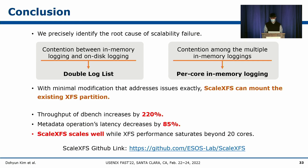To conclude: in this work, we precisely identified the root cause of scalability failure in XFS, finding two major contentions — between in-memory and on-disk logging, and among multiple in-memory loggings. To resolve these, we propose the double log list and POCO in-memory logging. With simple but elegant data structures, we minimize code modification, allowing ScaleXFS to mount existing XFS partitions. ScaleXFS achieves 220% higher DBench throughput, 85% lower metadata operation latency, and scales well beyond 20 cores where XFS saturates. Source code is available online.